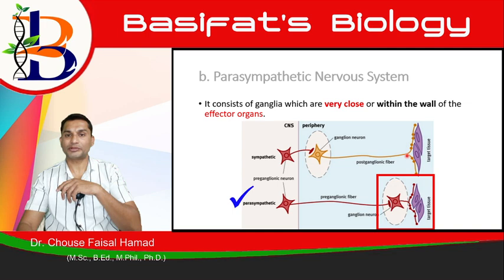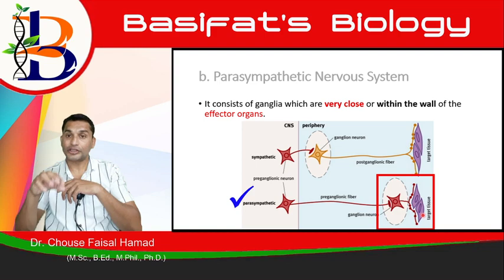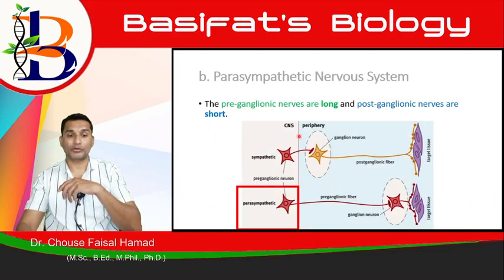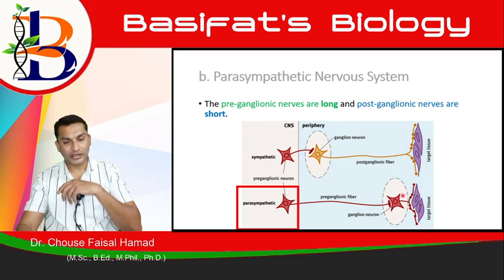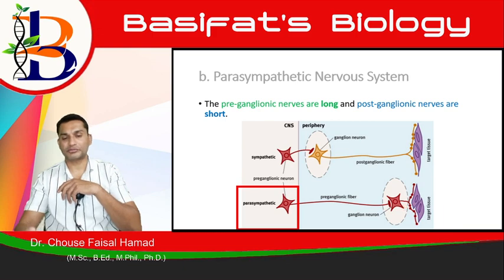Comparing the lengths in the parasympathetic system: the pre-ganglionic neuron is very long, while the post-ganglionic neuron is short. This is the opposite of the sympathetic system, where the pre-ganglionic is short and the post-ganglionic is long. This length difference is a key distinction between the sympathetic and parasympathetic systems.